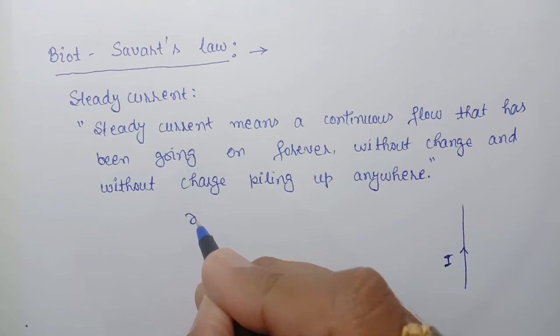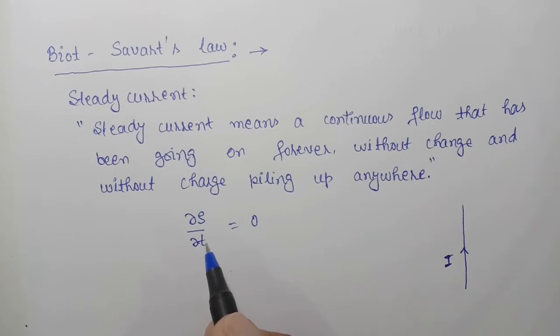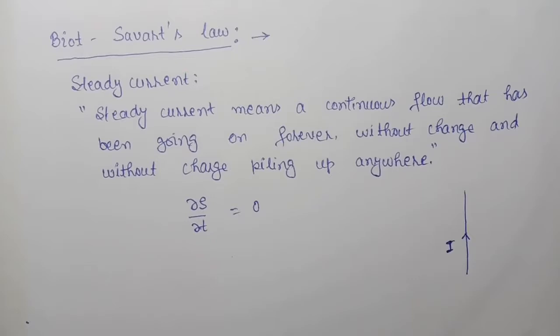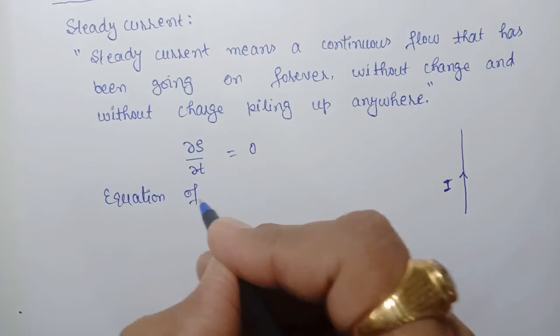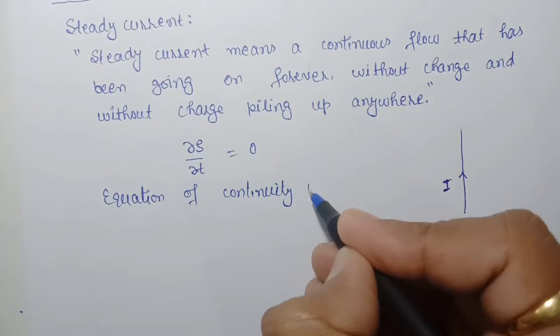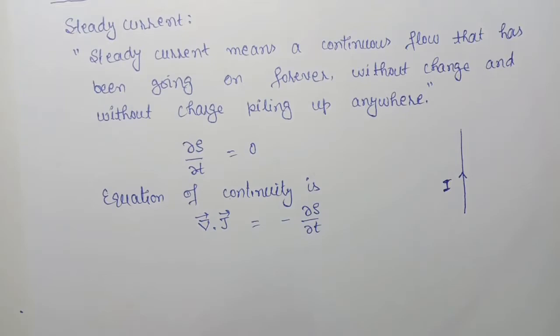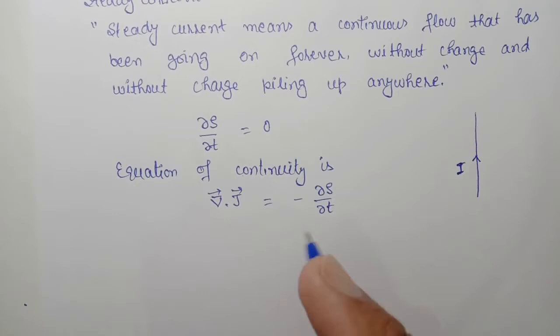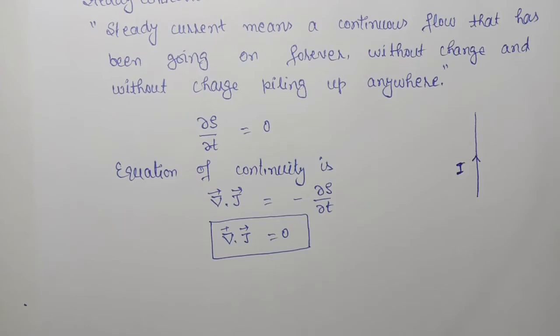Mathematically we can write ∂ρ/∂t = 0, that is the rate of change of charges with respect to time equals zero. We know that the equation of continuity is that the divergence of current density equals minus ∂ρ/∂t. For steady current this value equals zero, so we can write that the divergence of current density equals zero in the case of steady current.